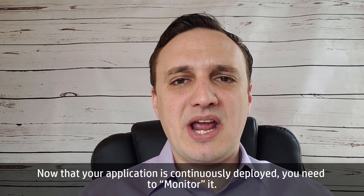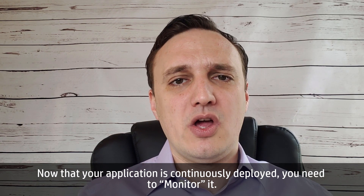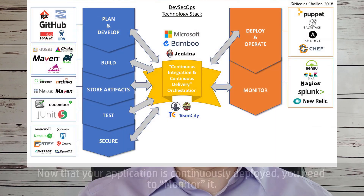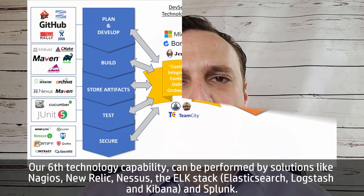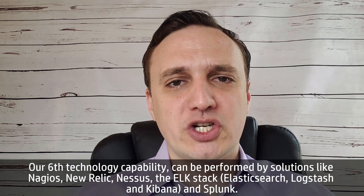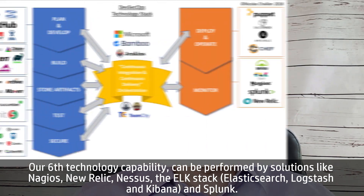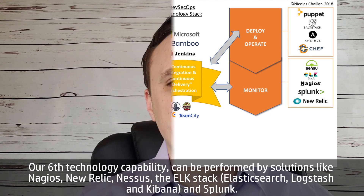Now that your application is continuously deployed, you need to monitor it. This sixth technology capability can be performed by solutions like Nagios, New Relic, Nessus, the ELK stack — Elasticsearch, Logstash, and Kibana — and Splunk.